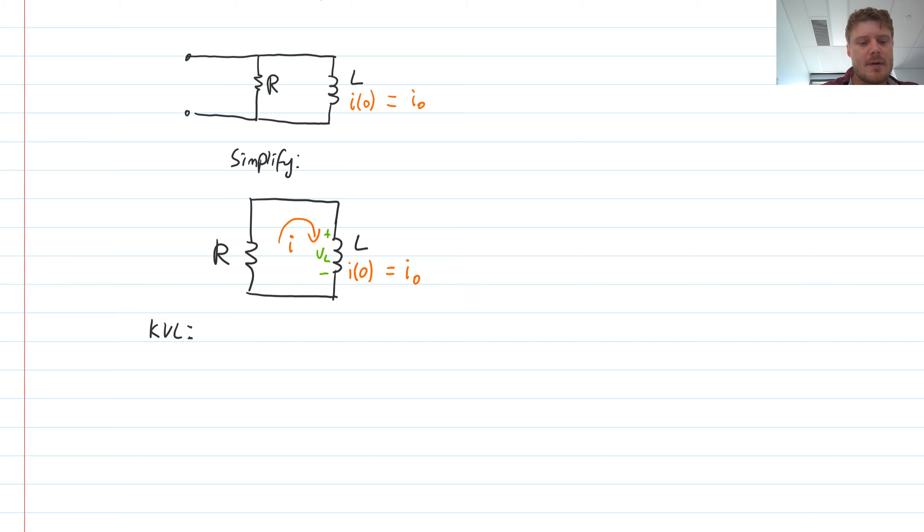So I will have due to the resistor, I will have a voltage of I times R. And due to the inductor, I will have a voltage of VL. However, we know that inductors have the definition that their voltage is L times di dt.